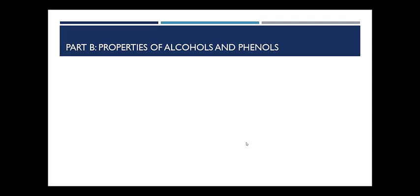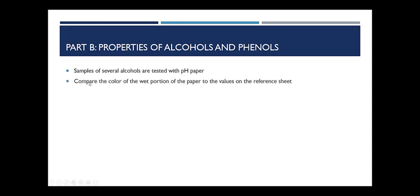The other issue we're going to look at in Part B is the relative acidity of alcohols. You will see pictures of samples of several alcohols tested with pH paper. What you're going to want to do is compare the color of the wet portion to the reference sheet which lists pH from 0 to 14. What pH values do we expect to see? Remember, we said that alcohols are generally quite neutral, so neutral would be a pH of 7. I would expect alcohols to show a pH in the range of about 6 or 7, typically very close to that. Now, phenols, on the other hand, we said are weakly acidic, so it is likely that their pHs will be a little bit lower.